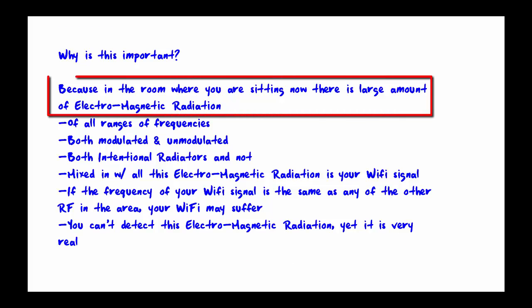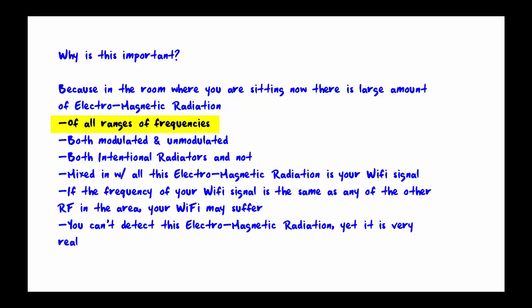So why is this important? Because in the room where you're sitting right now, there's a large amount of electromagnetic radiation. In that room, you'd have all ranges of frequencies, both modulated and unmodulated signals. A modulated signal means that it carries information. Unmodulated means that it does not carry information. A similar concept is between intentional radiators and non-intentional radiators. An intentional radiator is a device that was designed to emit electromagnetic radiation, like a radio tower. You also have things that emit radiation that weren't designed to do that, like a microwave oven. That radiation is not affecting any good purpose. It's just there because of the design of the microwave.